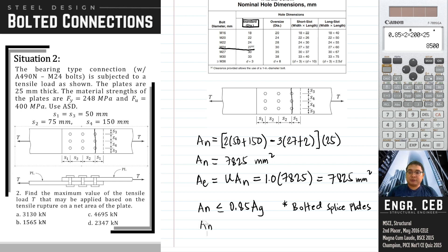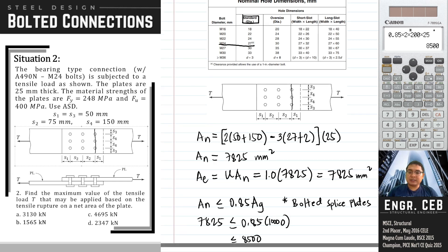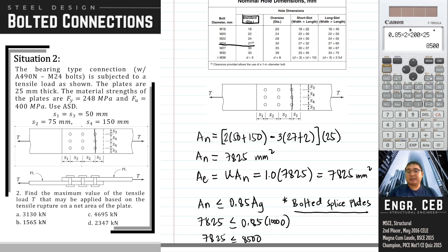In the case that the problem involves bolted splice plates, we should check: our computed net area is 7,825, compared to 85% of the gross area, which is 85% of 10,000 = 8,500. Since 7,825 is less than 8,500, our net area is a valid value. If the net area were greater than 85% of the gross area, we would not use that computed net area and would instead use 85% of the gross area. Again, this code provision only applies to bolted splice plate connections.